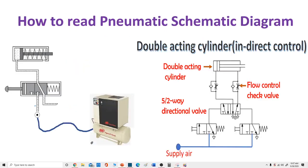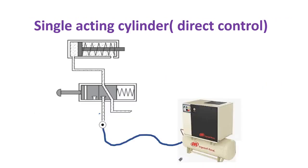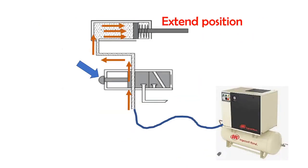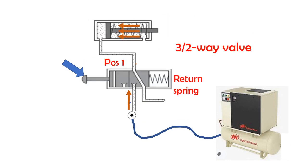Now let's look at how to read a pneumatic schematic diagram. This is a single acting cylinder: it is to advance when a push button is pressed, and the cylinder is to remain in the advanced position until you release the push button. When you release the push button, the cylinder is to retract by a return spring.